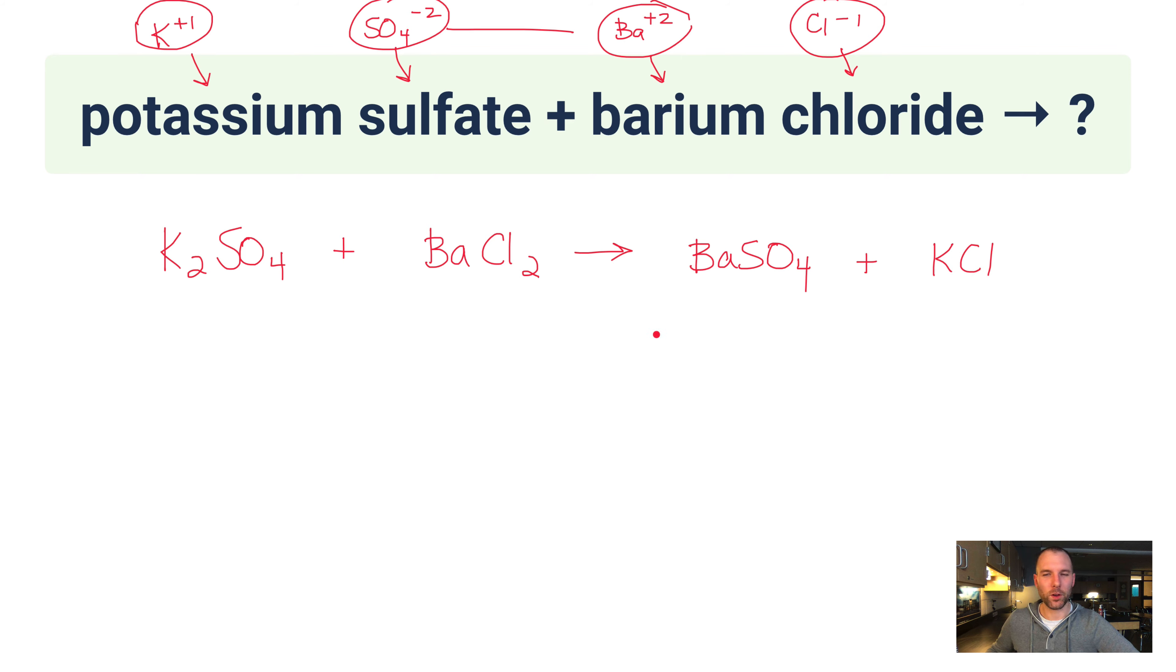Now the way to balance this, and hopefully you're seeing this really quickly. If you notice, we've got two chlorides on the left and only one on the right, two potassiums on the left and only one on the right. We just balance it by putting a 2 coefficient in front of KCl, and now we're good to go.